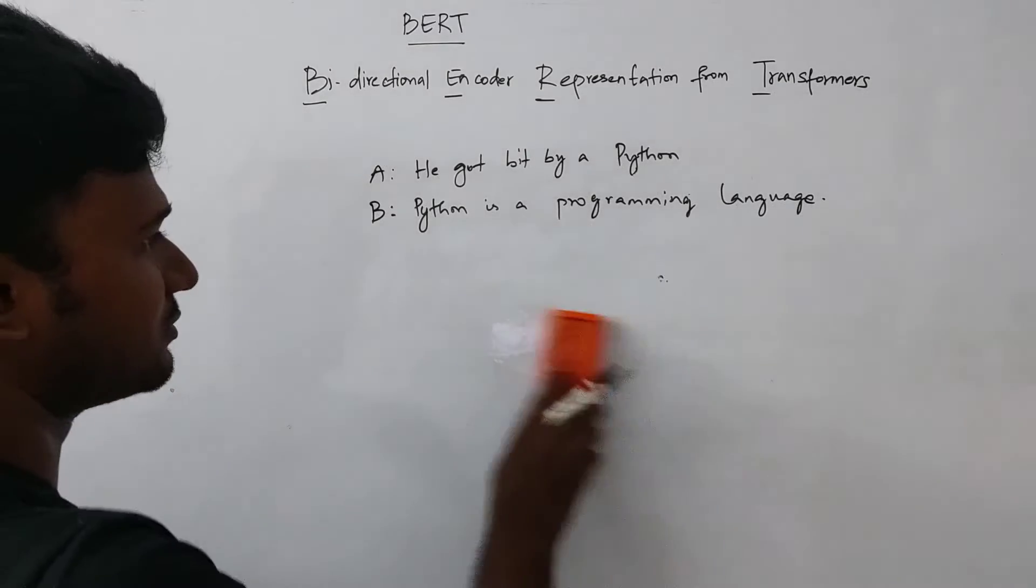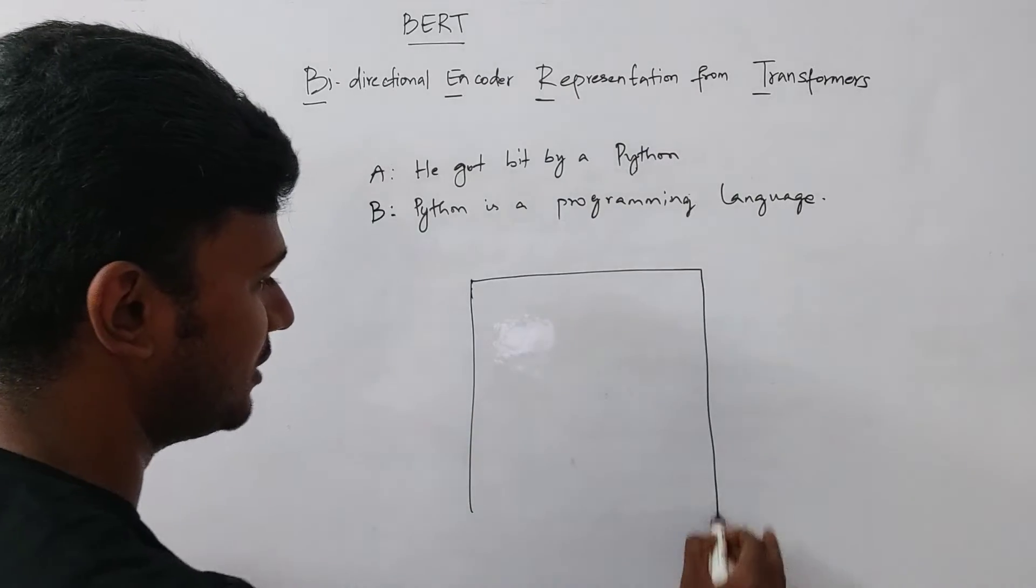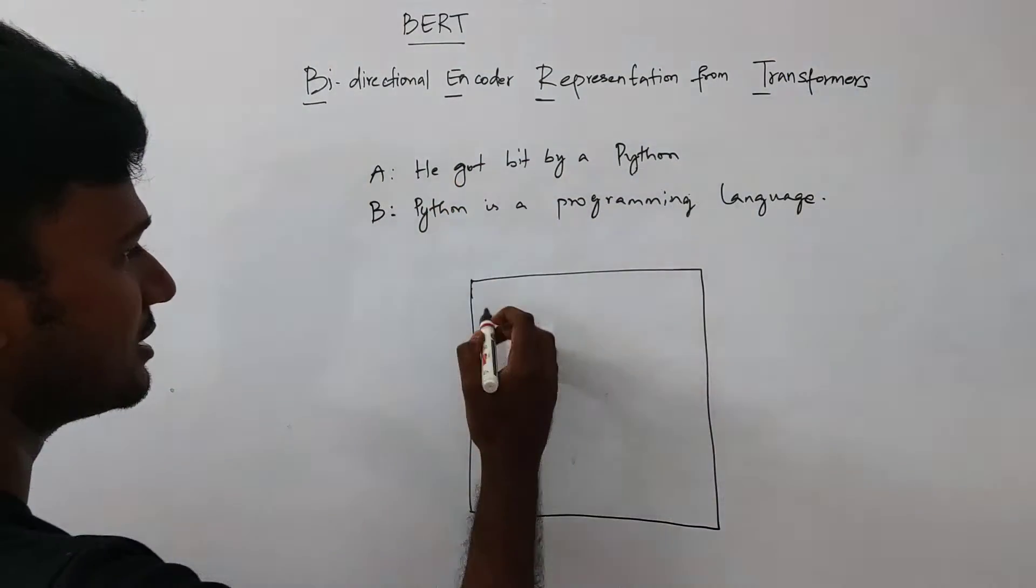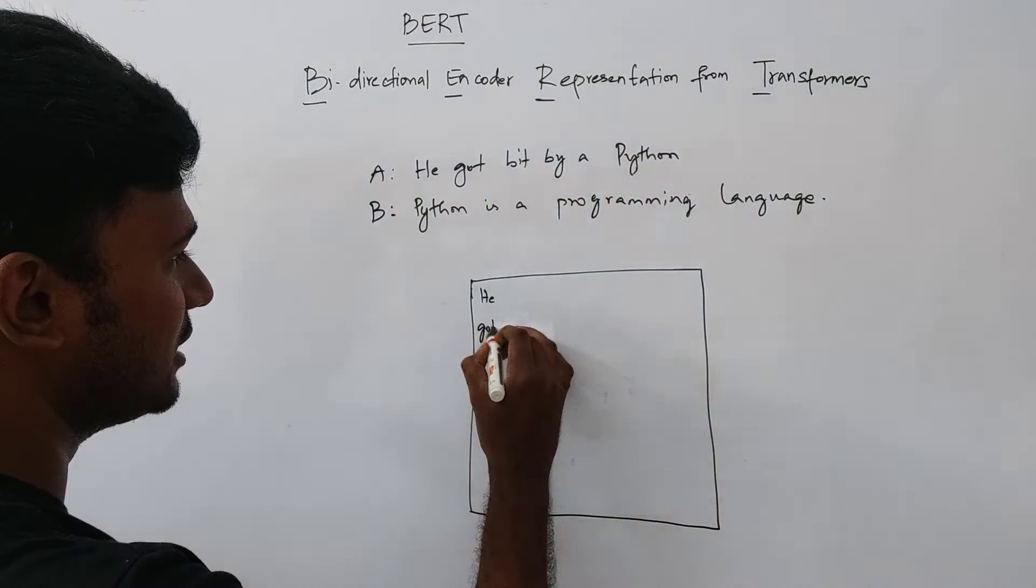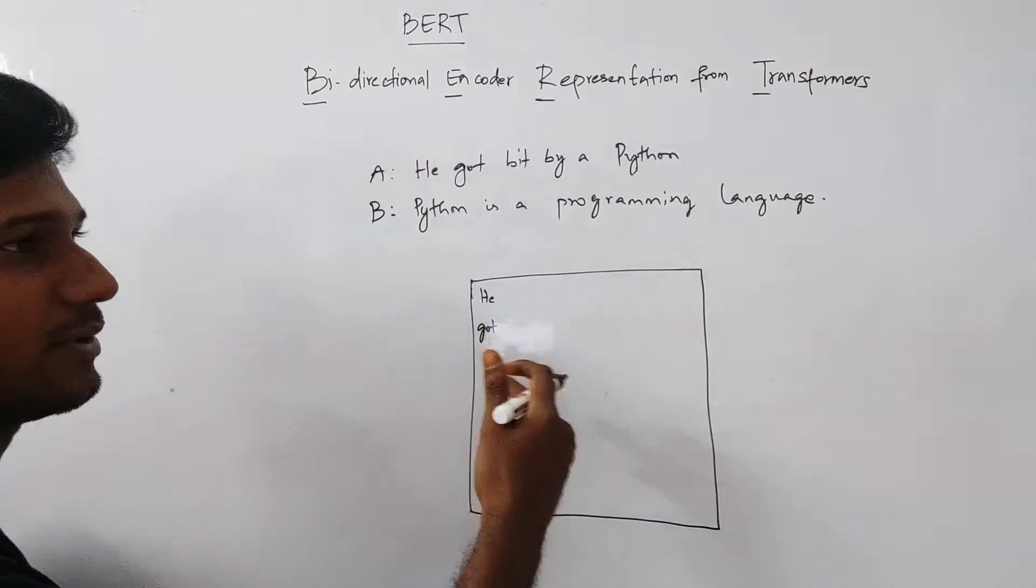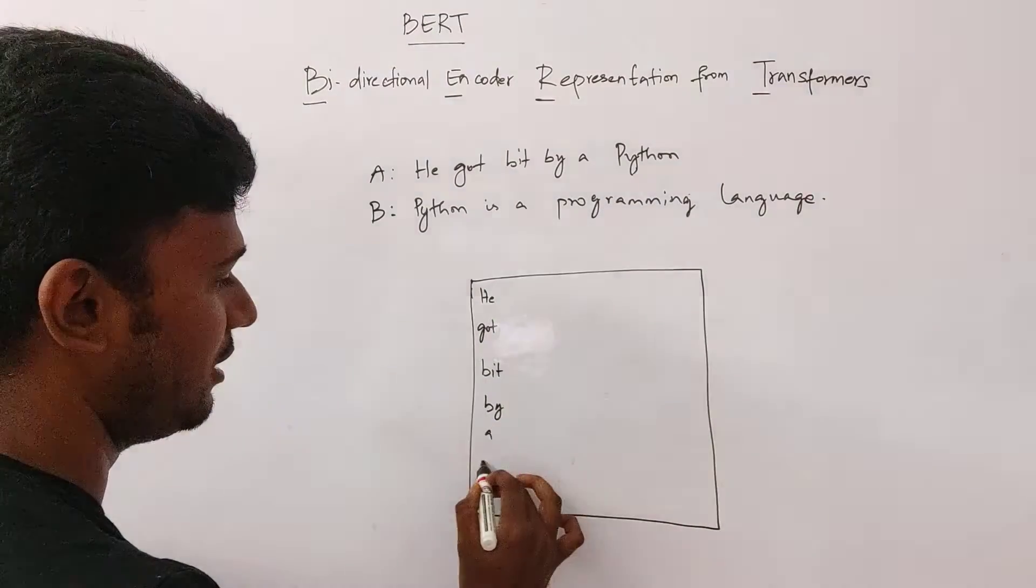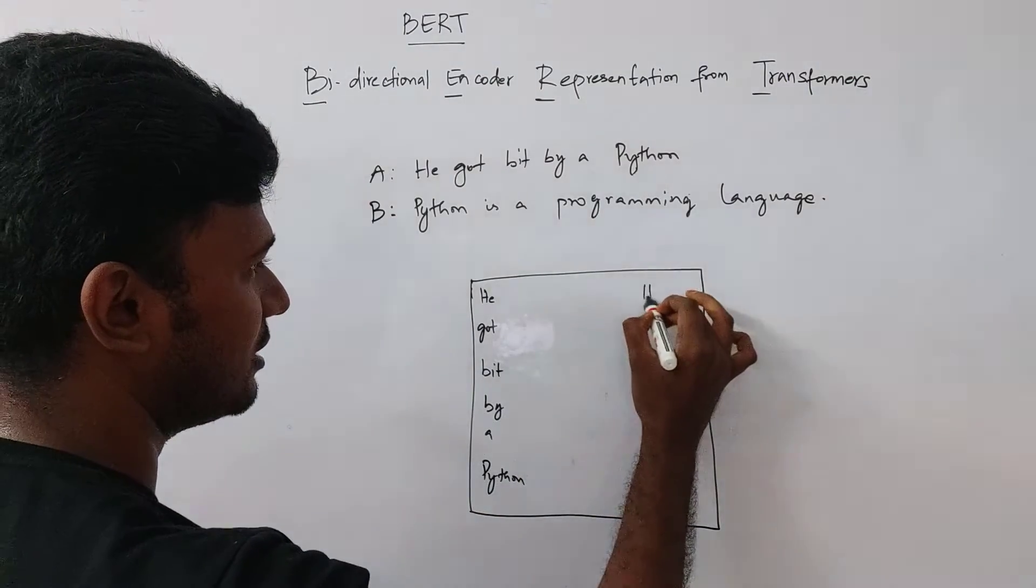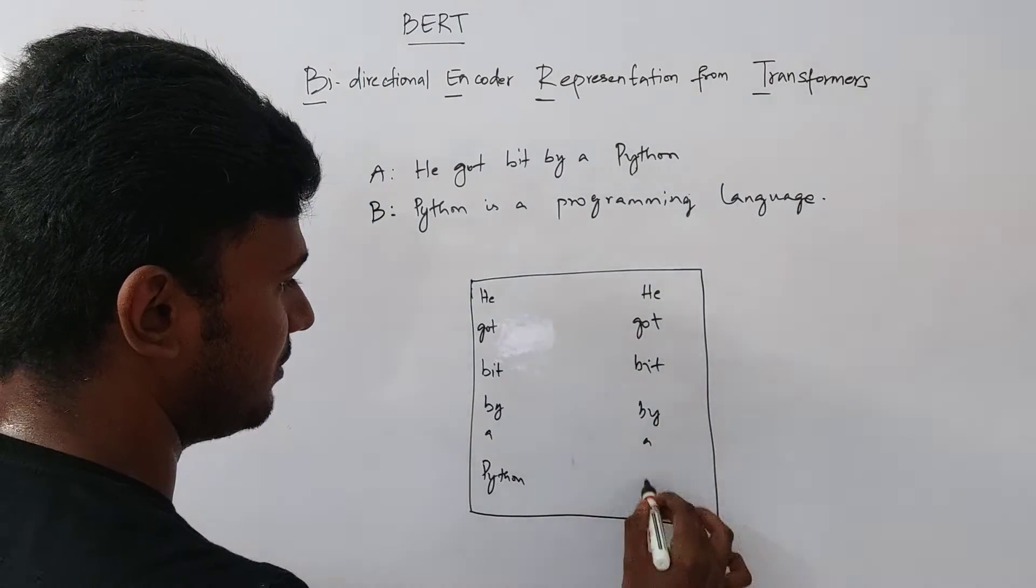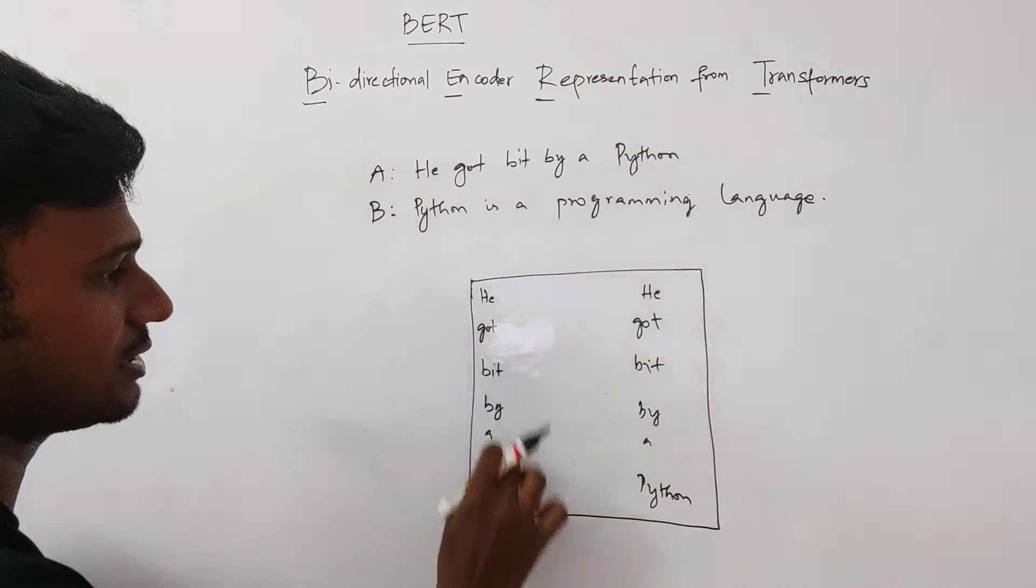So now let's see how this works. Let's take sentence A as an example. What the basic idea behind BERT is that BERT basically compares every single word in the sentence with every other word in the same sentence. For example, here we have he got bit by a python and similarly, we'll write the same here on the right side as well. So here we have python, so how this python relates to every other word in the sentence, we'll see.